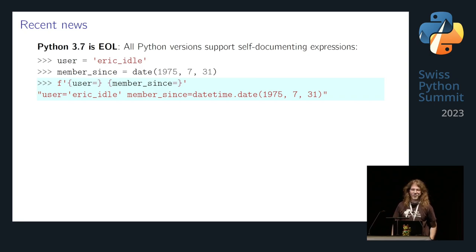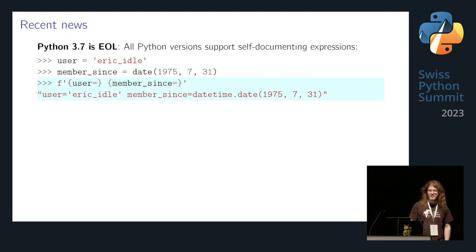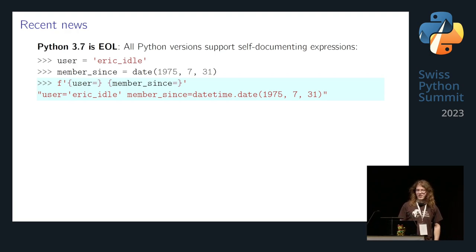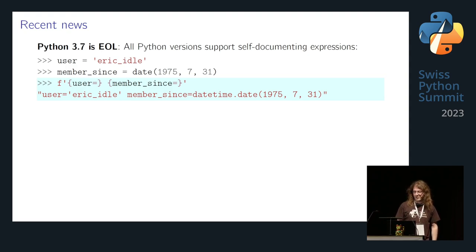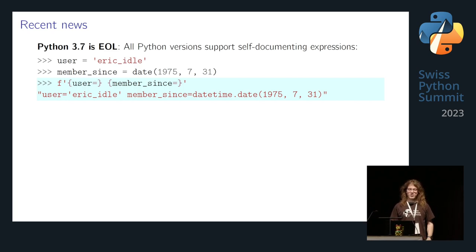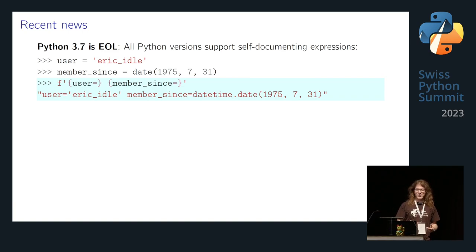I want to close with a couple of news about f-strings. Python 3.7 is end-of-life now, which means all currently supported Python versions support self-documenting expressions — where you can add an equal sign after your variable, and it prints both the name as well as the value, which is perfect for debugging output.